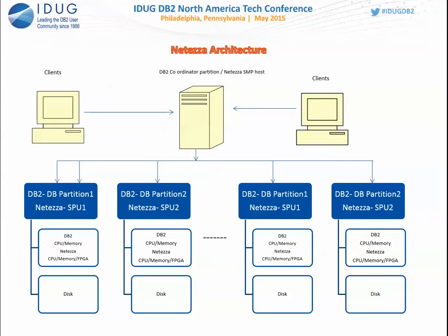The Netezza architecture can be compared closely to DB2 running on Data Partitioning Feature (DPF). In DB2 DPF, a coordinator partition accepts all SQL requests from clients, breaks that work, and gives it to each individual database partition. Each partition has its own CPU, memory, and disk — it processes its portion of data and returns it to the coordinator, which merges results and sends them back to clients. Netezza is very close to that model.